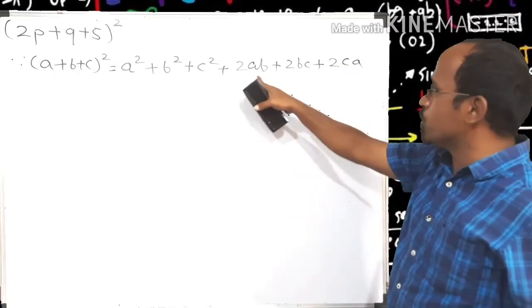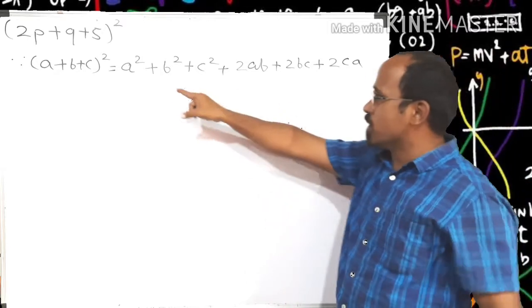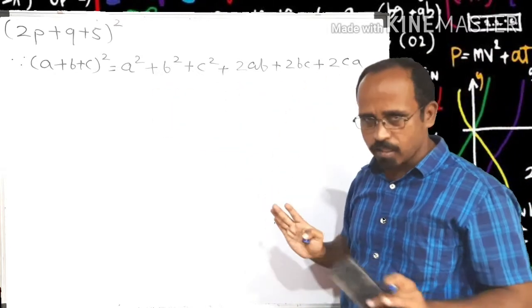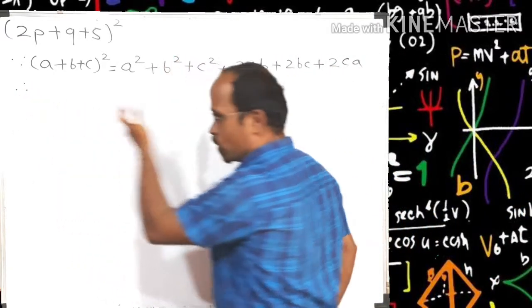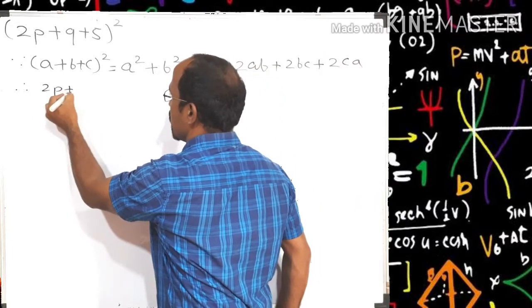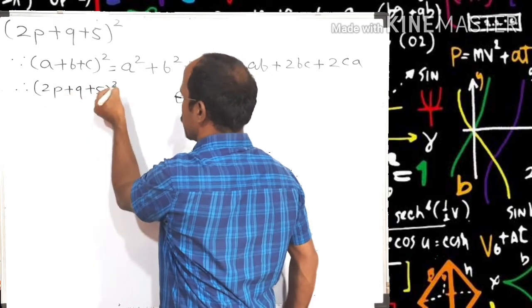2ab, 2bc, 2ca, clear friends? Means the formula is 2ab + 2bc + 2ca. Then if (a+b+c)² is equal to this, then (2p+q+5)² is equal to...